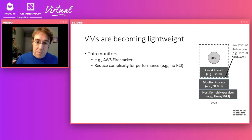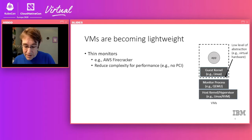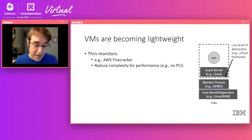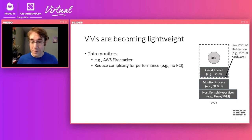The VMs we're seeing in the context of containers are not like the virtual machines of old. In fact, virtual machines are becoming much, much more lightweight. If you look at AWS Firecracker, they don't call them just virtual machines — they call them micro VMs to capture that lightweight essence.